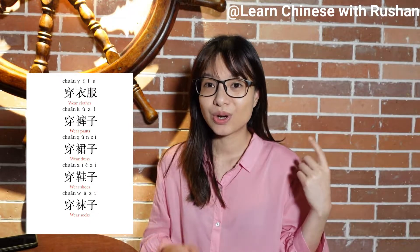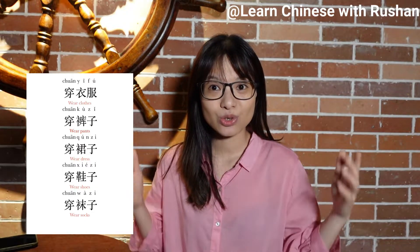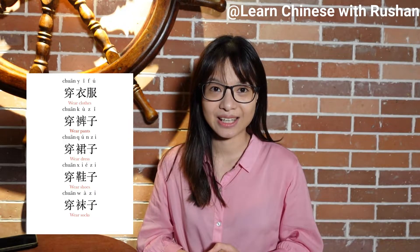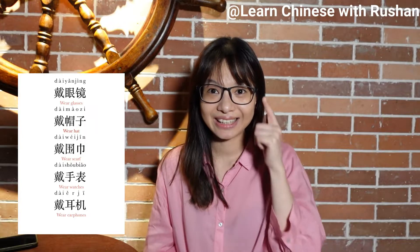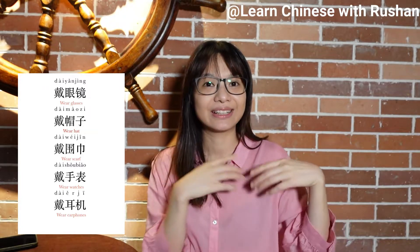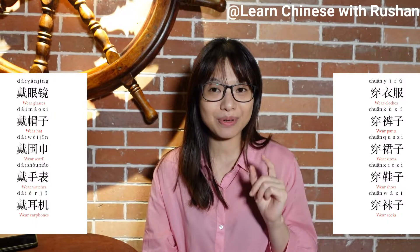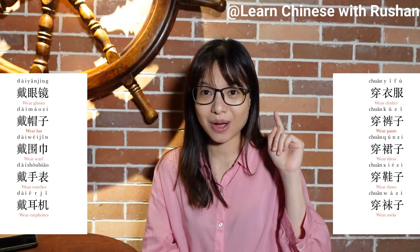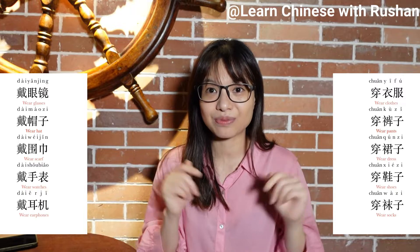Now let me give you the observations — the examples of the objects that follow both 穿 and 戴. So we say 穿衣服, 穿裤子, 穿裙子, 穿袖子, 穿鞋子. But with 戴, we say 戴眼镜, 戴帽子, 戴围巾, 戴手表, 戴耳机. I'll give you a moment to think about the similarity between these two groups.